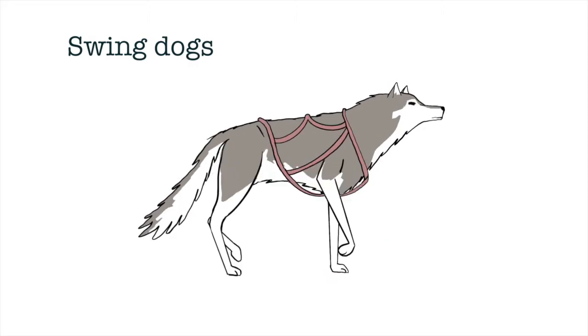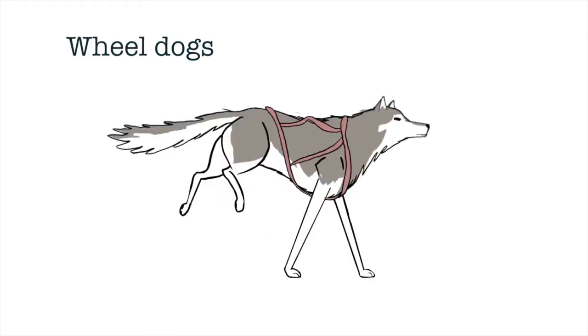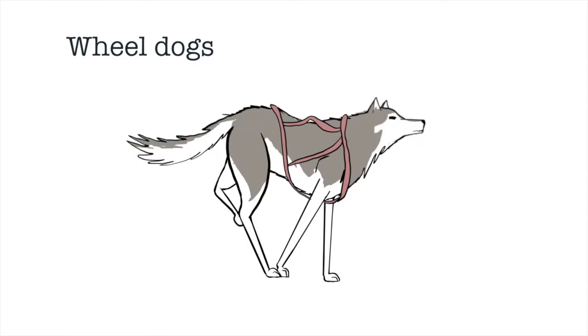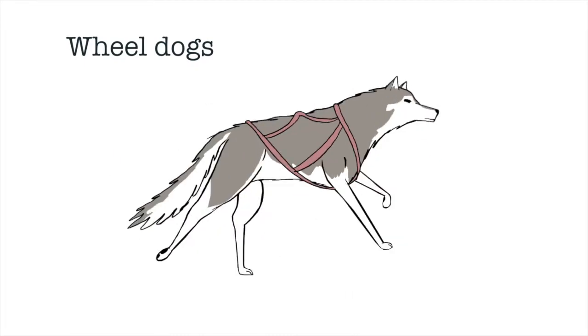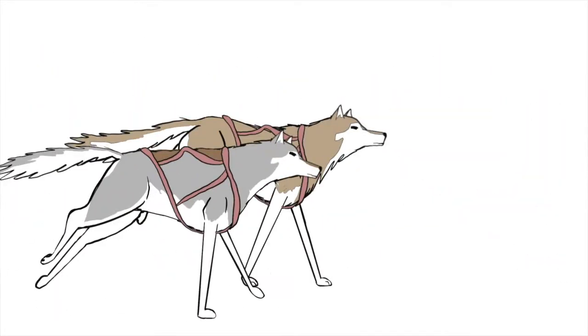Behind them in the lineup are swing dogs, and those dogs direct the team around turns and curves, and at the back of the dog team are known as the wheel dogs. Wheel dogs run right in front of the sled and are usually the largest and strongest of the team. The rest of the dogs are just known as team dogs for a maximum of 16 dogs per team.